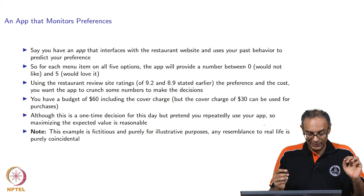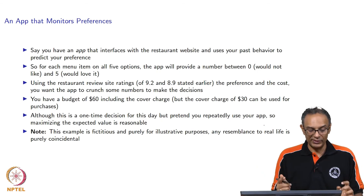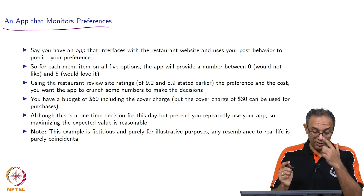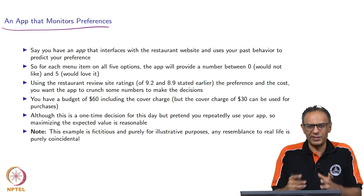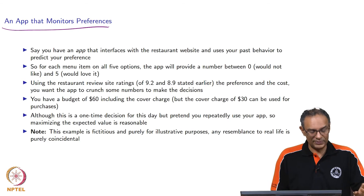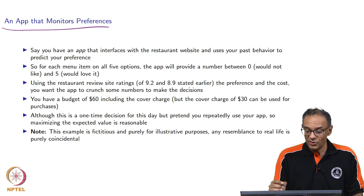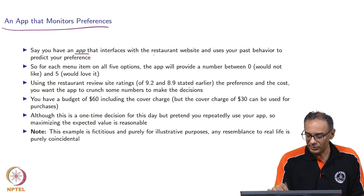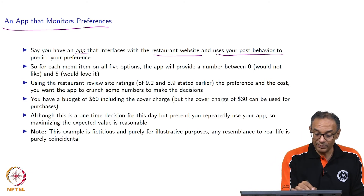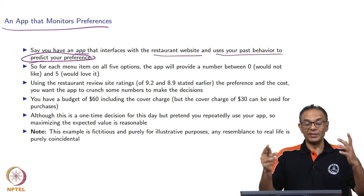Once you do that, now this part is something that will likely come up in real life soon. There's an app that monitors your preferences, your tastes, your history — because you don't want to sit down and do all these calculations yourself. You want an app that will go to these websites, get this information, and do some numbers. This app talks to the restaurant website and uses your past behavior to predict what your preferences are.